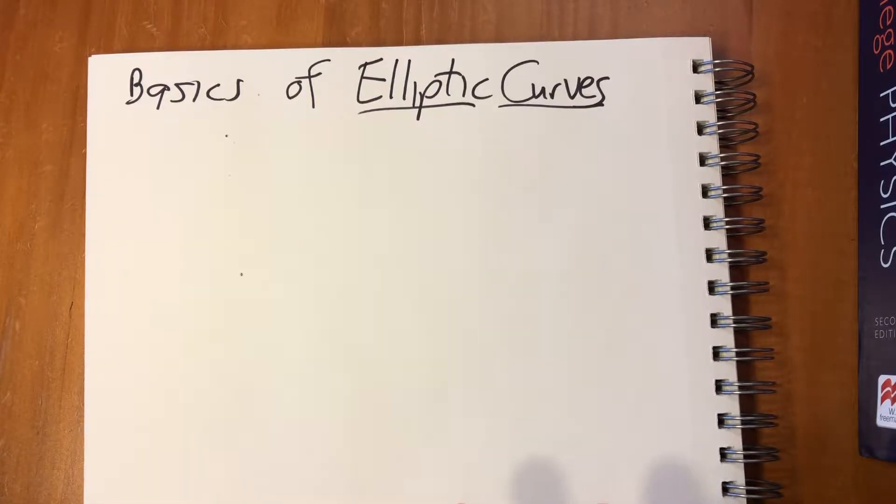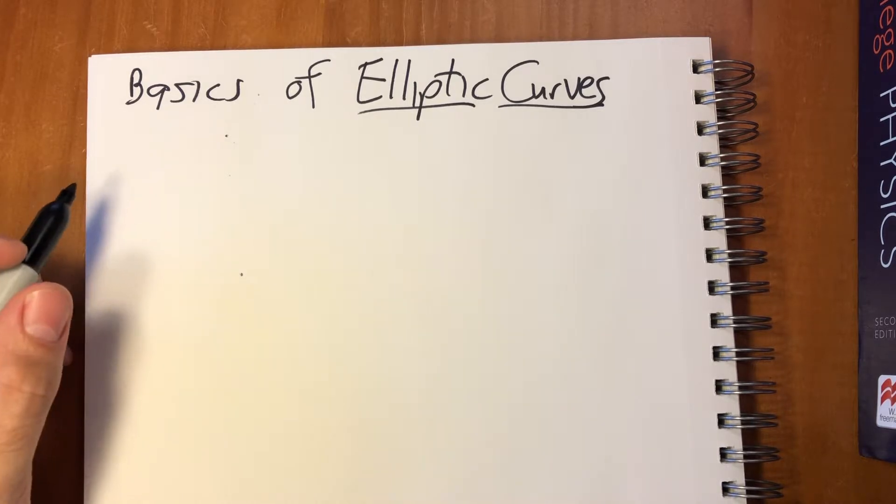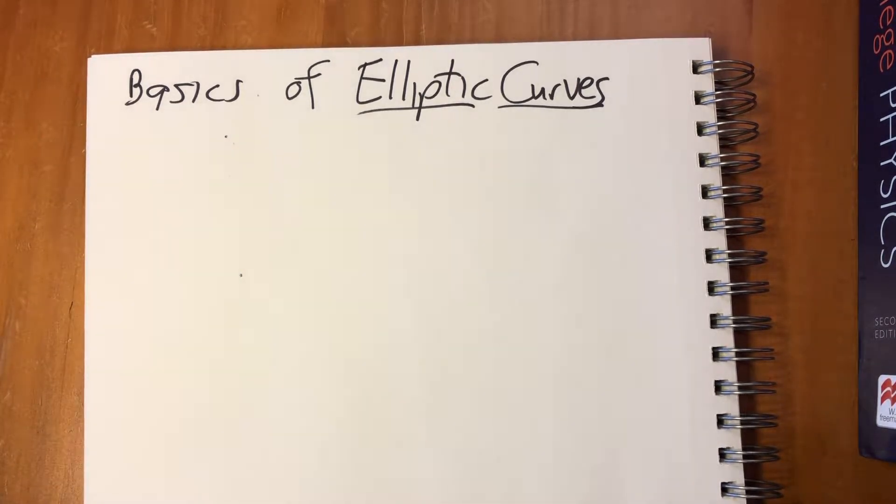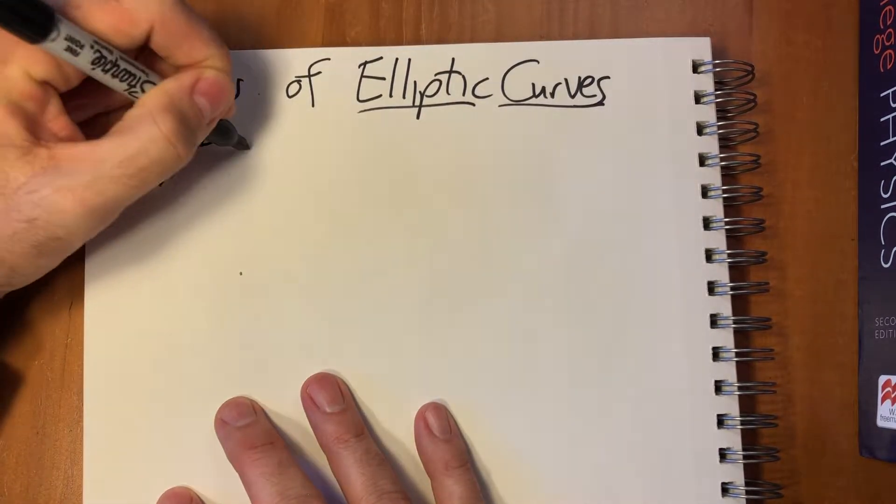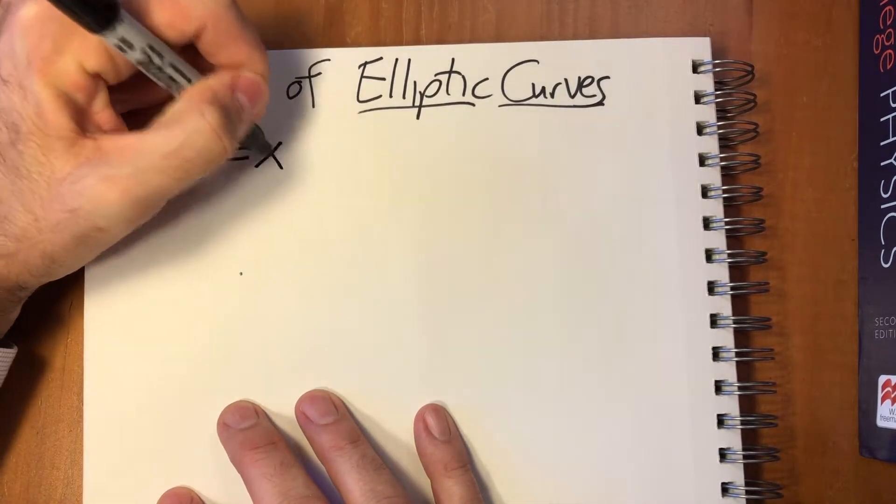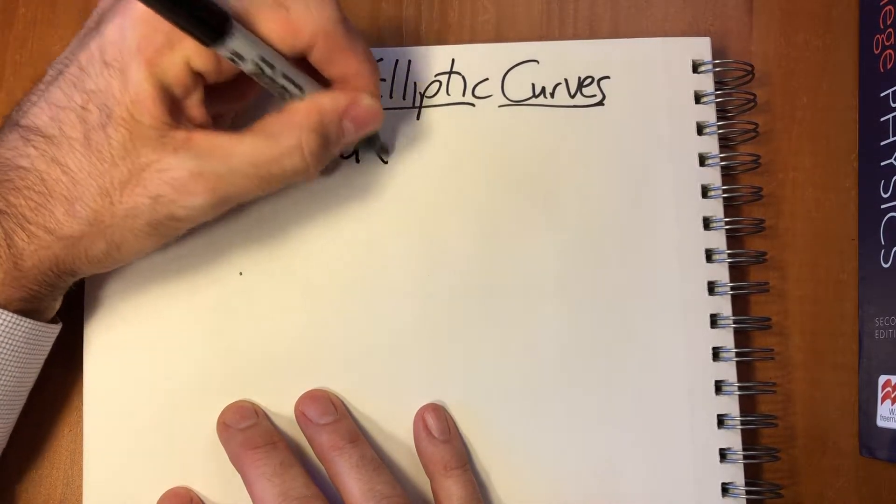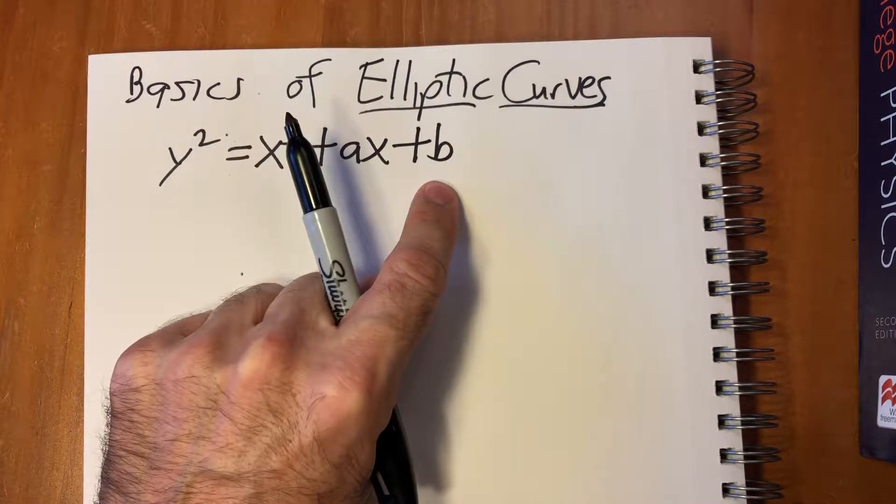So part one is elliptic curves over real numbers and the general group law for any elliptic curve. Elliptic curves themselves are just graphs on the Cartesian plane, the XY plane.